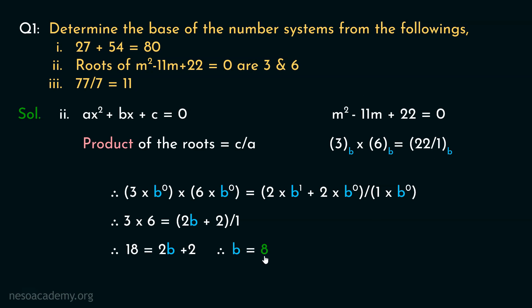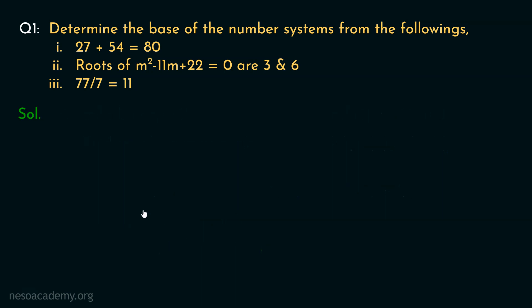Let's now move on to the third equation. This states 77 by 7 equals 11. Since we are unaware of the base, just like the previous ones, let's assume the base is b. Now, multiplying both the sides by 7 base b, we obtain 77 base b equals 11 base b into 7 base b. Let's convert this entire equation to decimal.